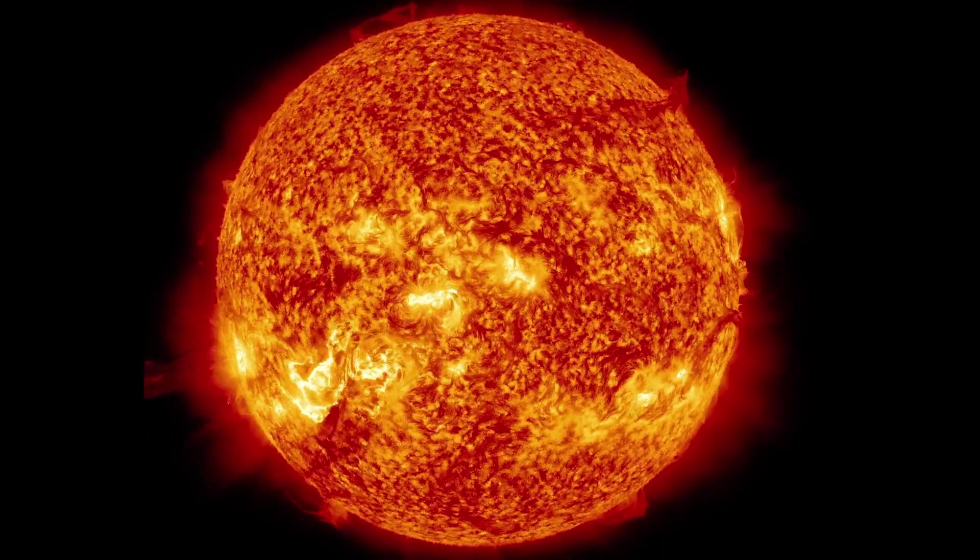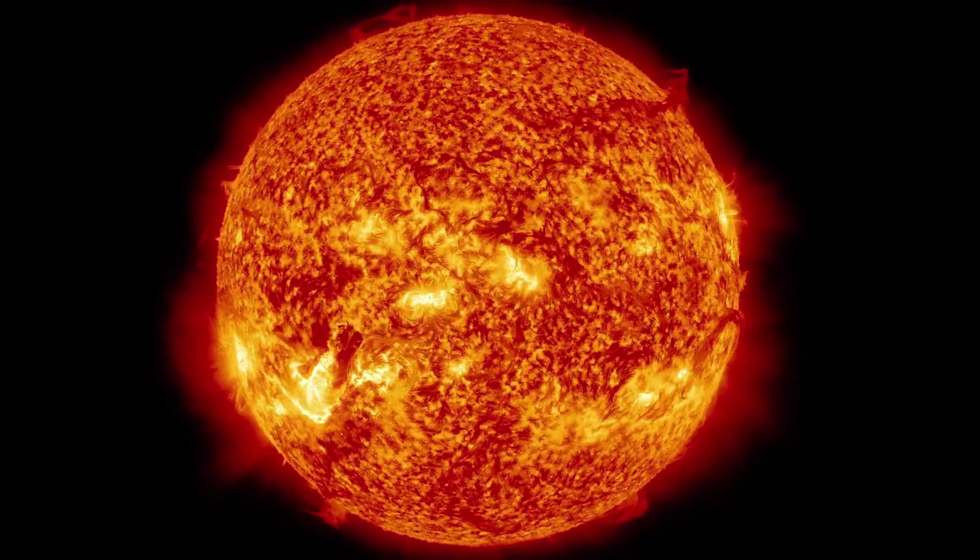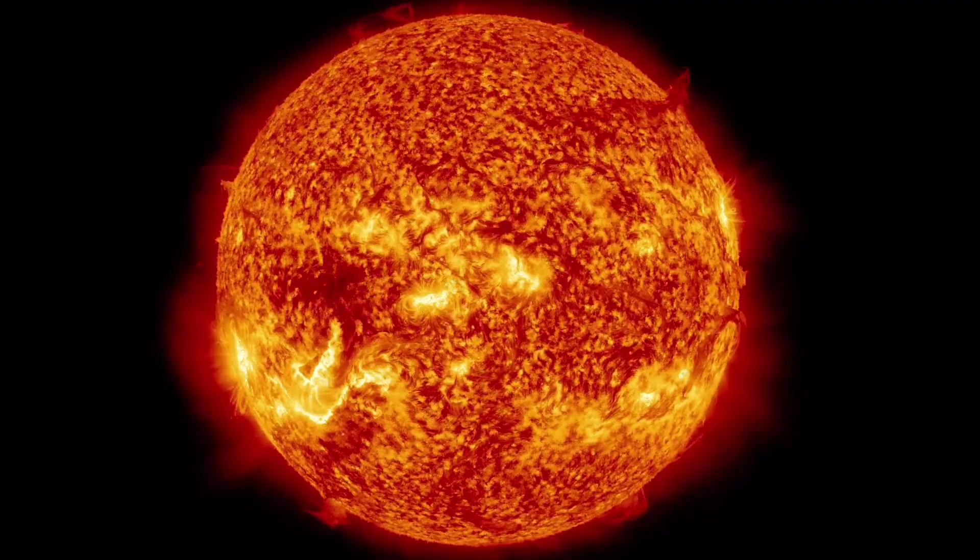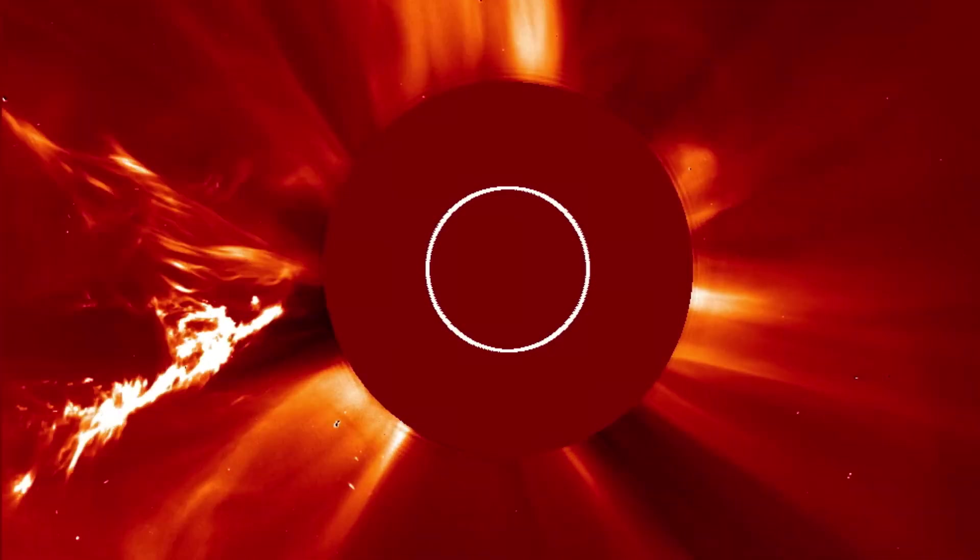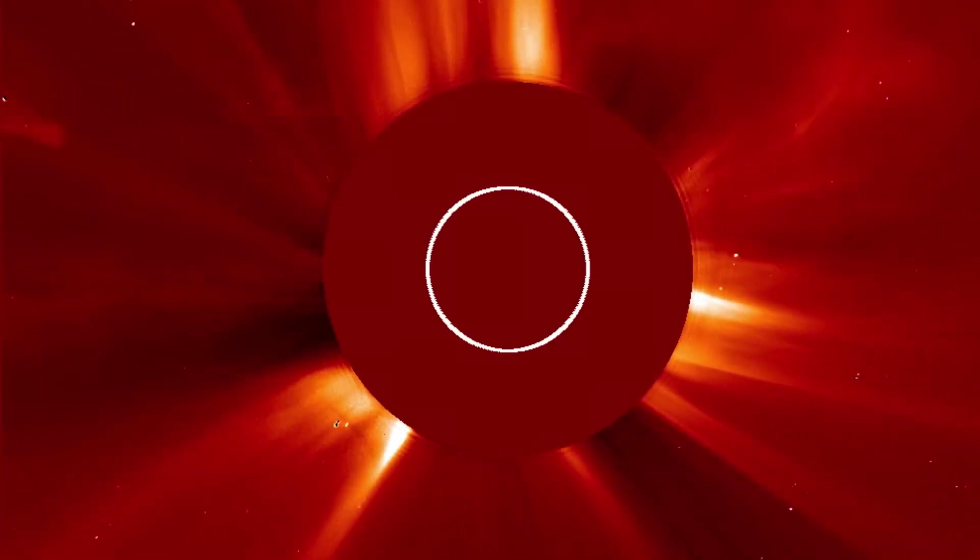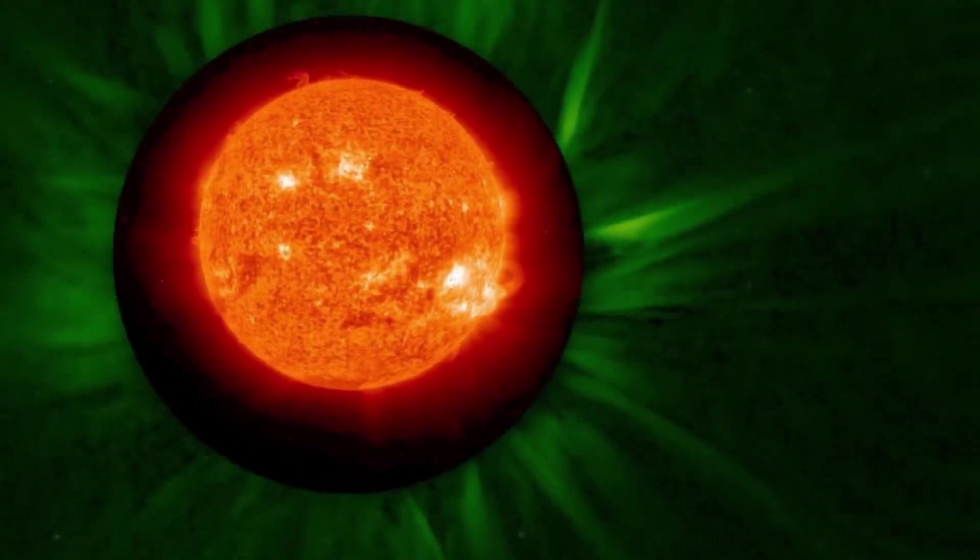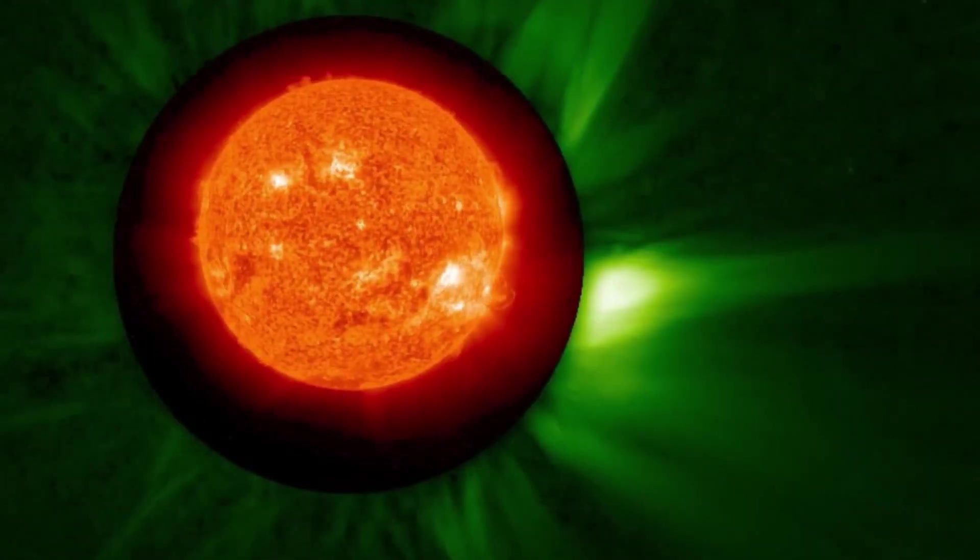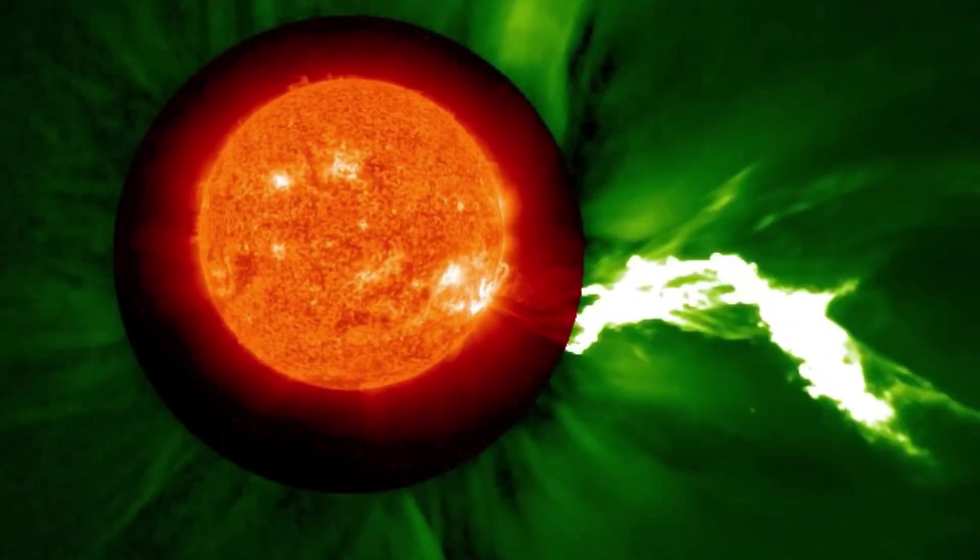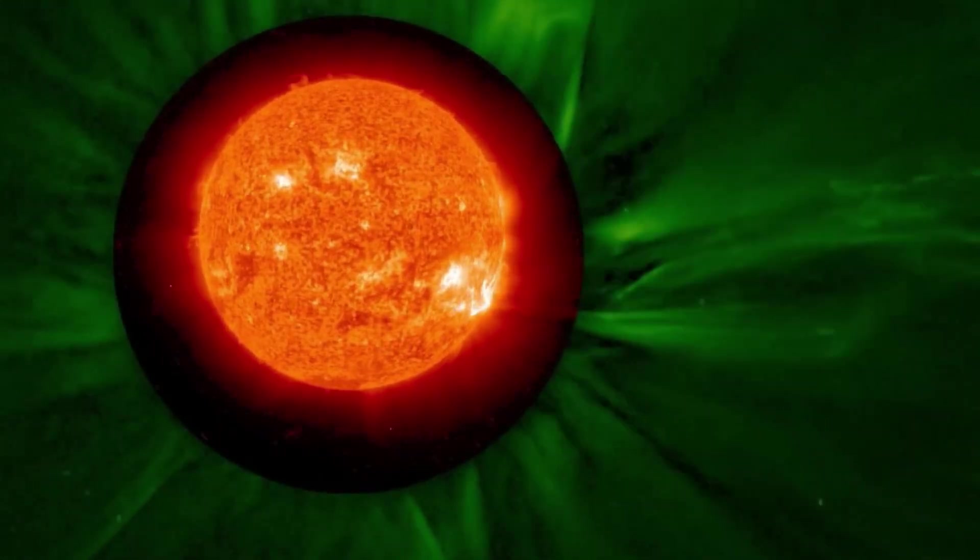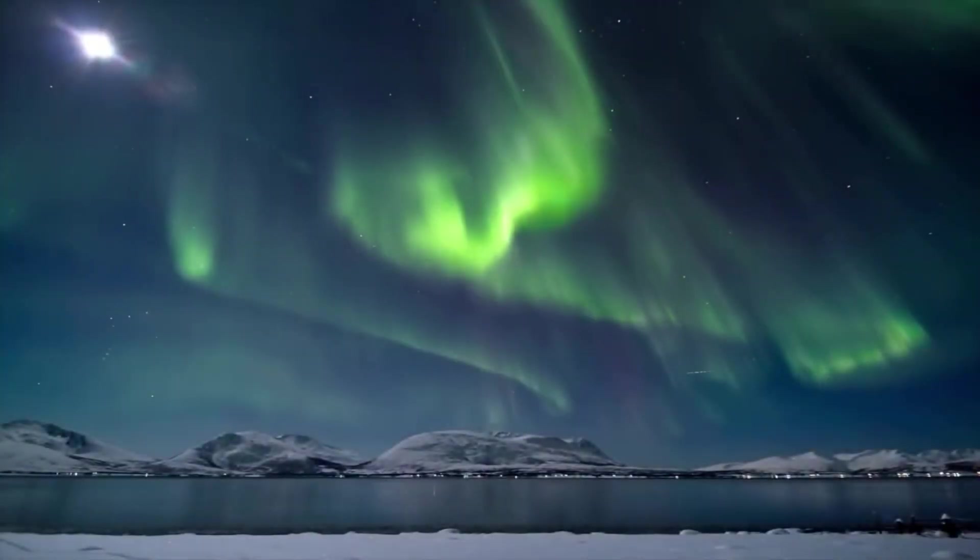However, it's important to note that the Sun is not a constant entity. It changes. One of its more prominent cycles spans approximately 11 years and is characterized by heightened activity, substantial plasma discharges, and powerful solar flares. These solar flares can disrupt our technological systems, and historically, they have resulted in significant damage and created breathtaking auroras.